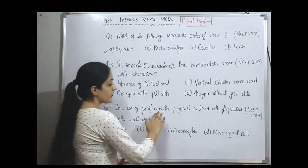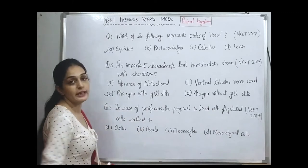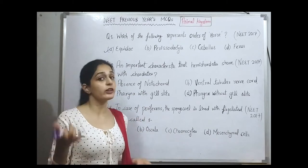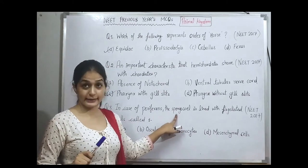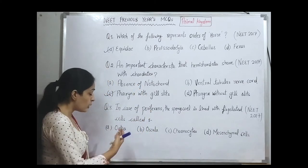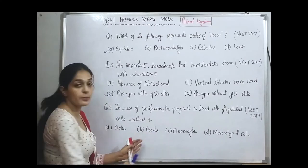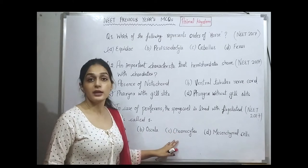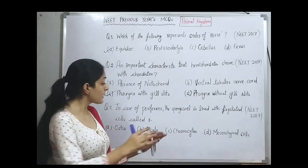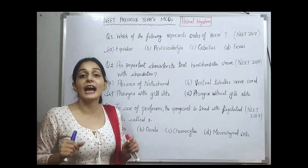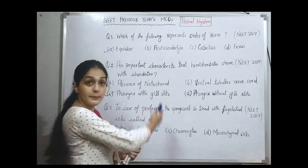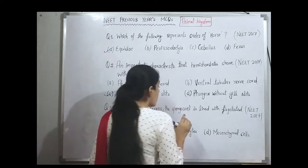Question number three, also from 2017: in the case of Porifera (sponges), the spongocoel is lined with flagellated cells called what? Porifera have many pores; the body cavity is called the spongocoel. The options include ostia, osculum, and choanocytes. Ostia are the entry pores and osculum is the exit. Choanocytes are the correct flagellated cells. Archaeocytes are not flagellated. Choanocytes are important for digestion in Porifera. The correct option is choanocytes.